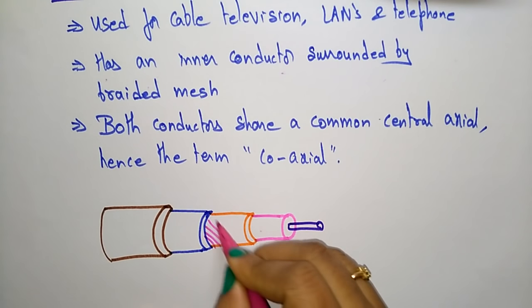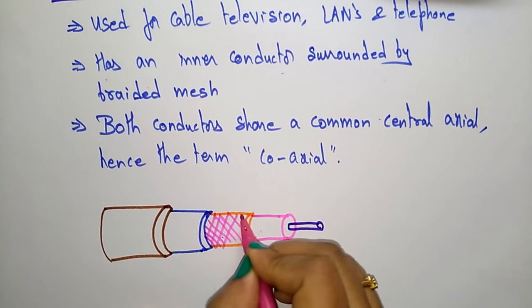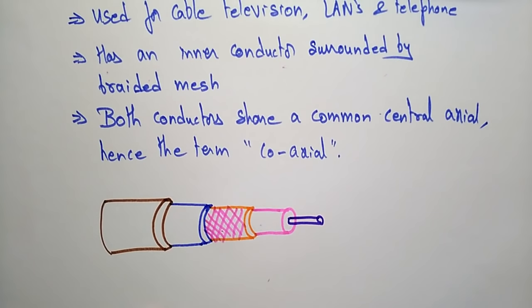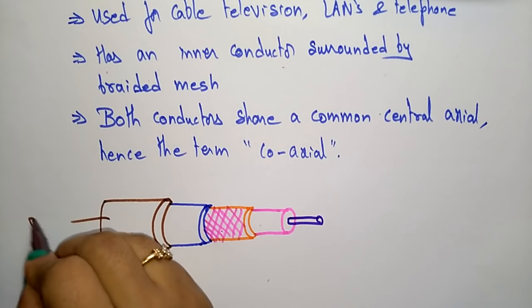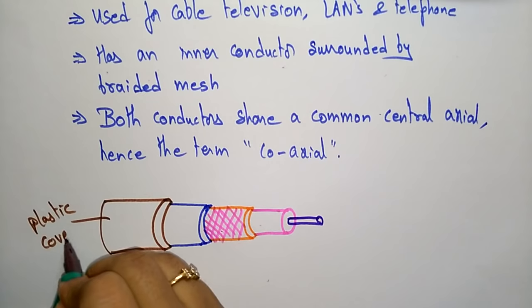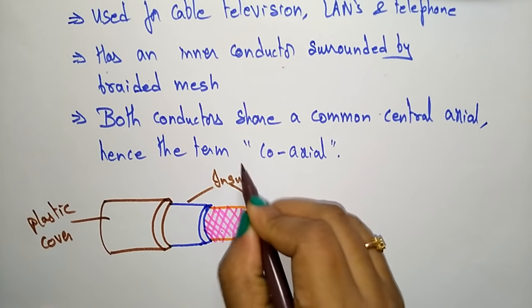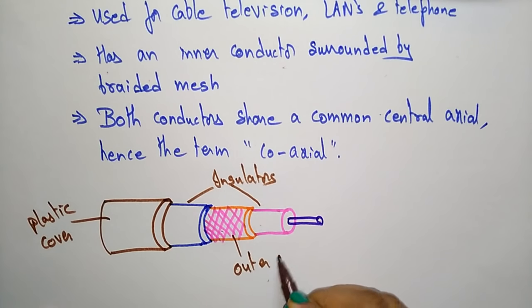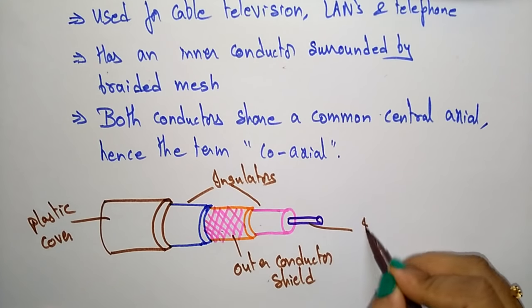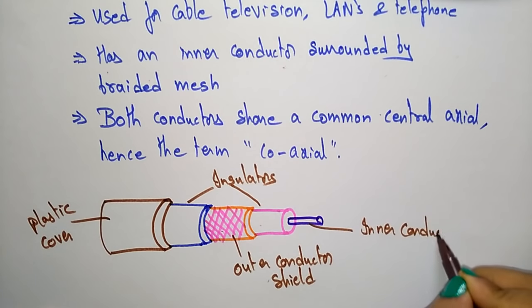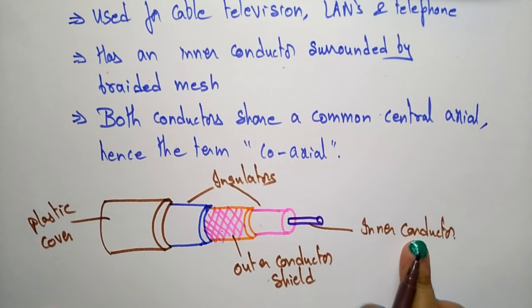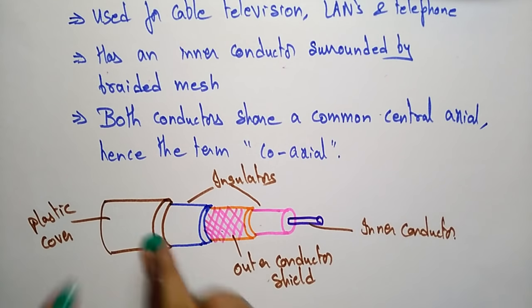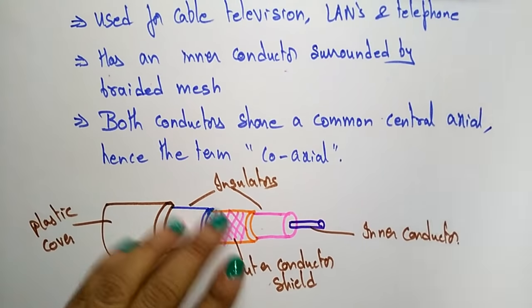This is the braided mesh, and this is the plastic cover. These two are the insulators. This you call the outer conductor shield, and this you call the inner conductor. So this is how the coaxial cable looks when you cut it.